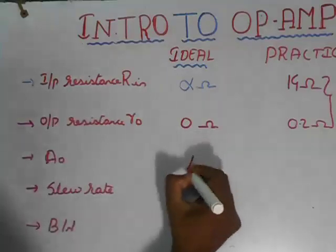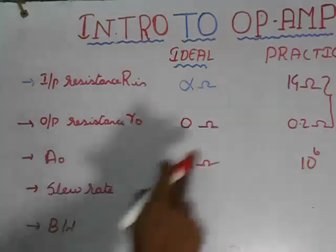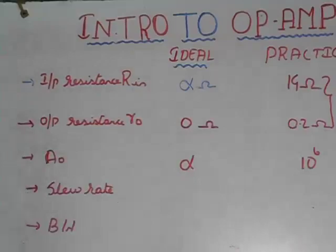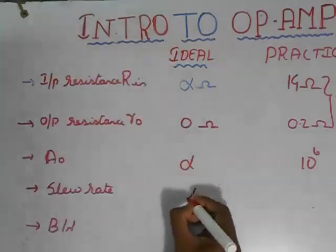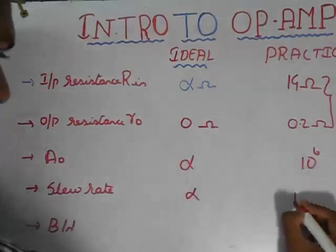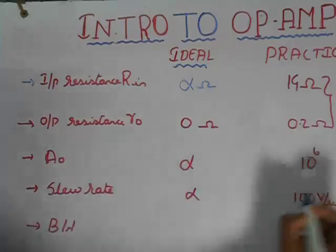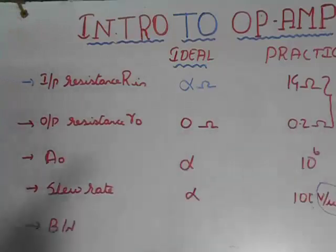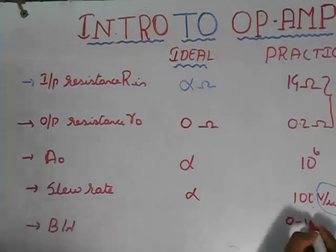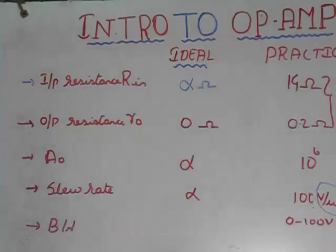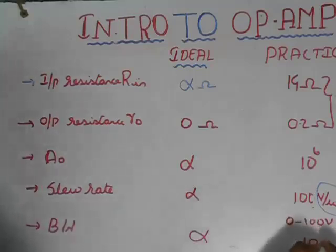Regarding gain: ideally it is infinite, and practically it is 10^6. For slew rate: I'll explain this in detail in a future class, but ideally it is infinite and practically it is 100 volts per microsecond — meaning the op-amp switches between 0 and 100 volts within 1 microsecond, which is so fast it cannot be seen with the naked eye. Bandwidth ideally is infinite, and practically it is 10 radians per second.